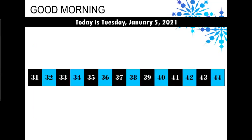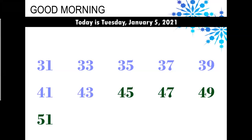This is our number line for today. Our number line goes from 31 to 44. First, let's go ahead and count the odd numbers on our number line. I added a few to the end that weren't on the number line. So let's go ahead and count these odd numbers: 31, 33, 35, 37, 39, 41, 43, 45, 47, 49, 51.